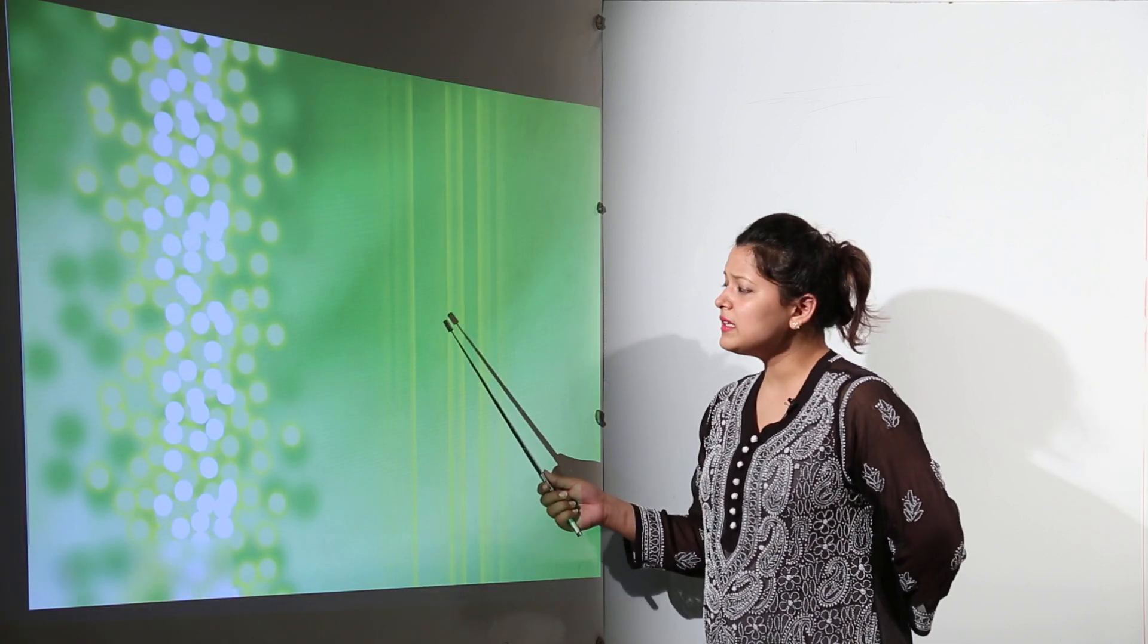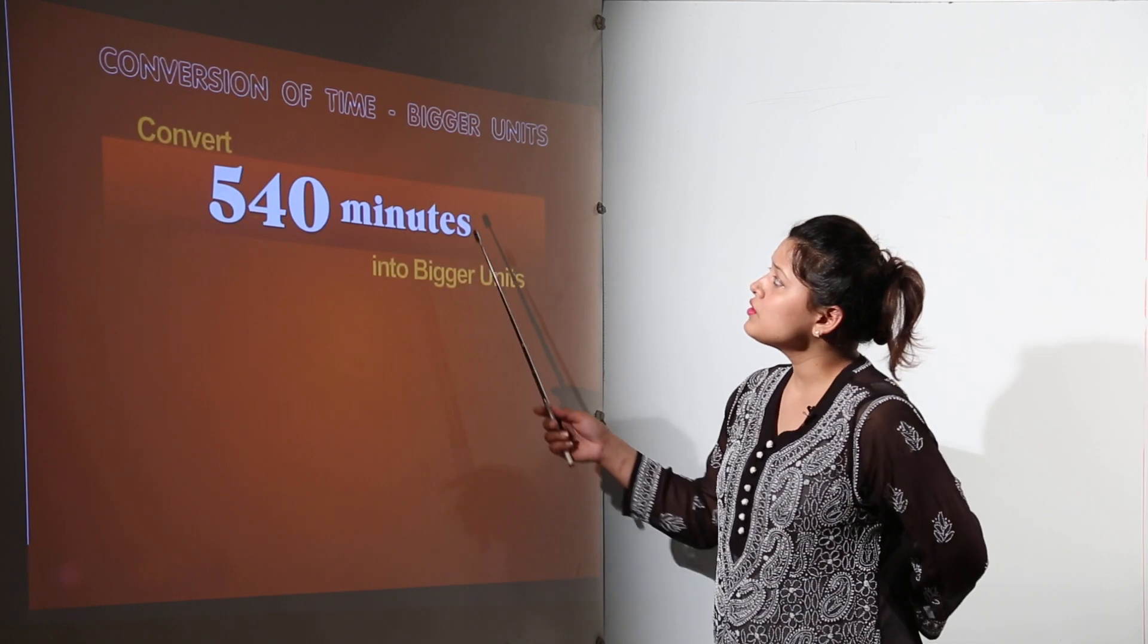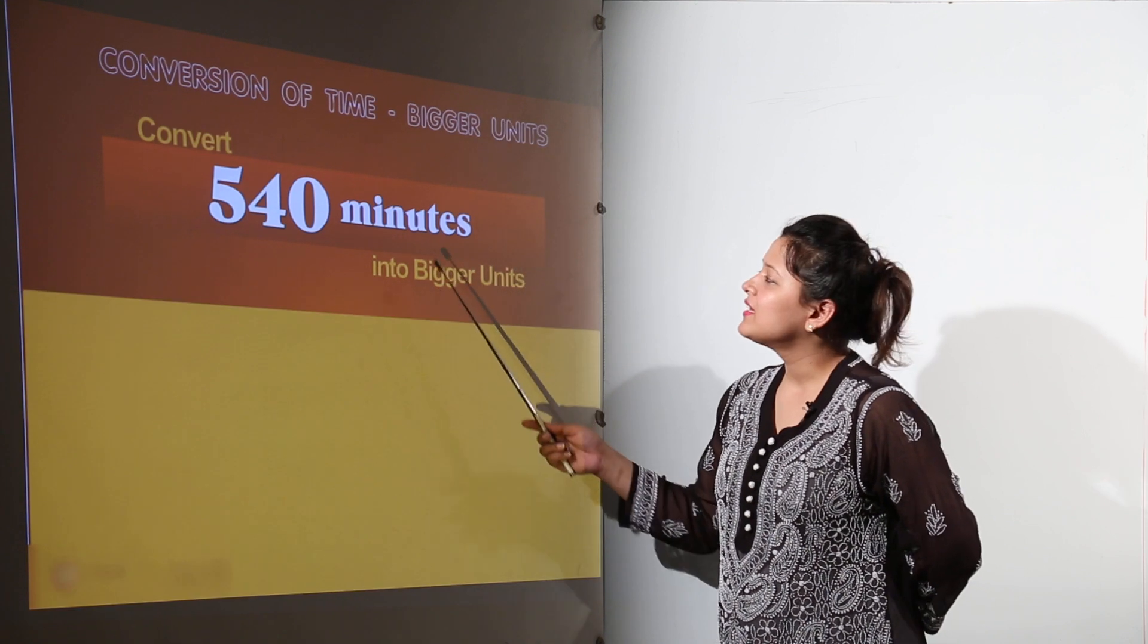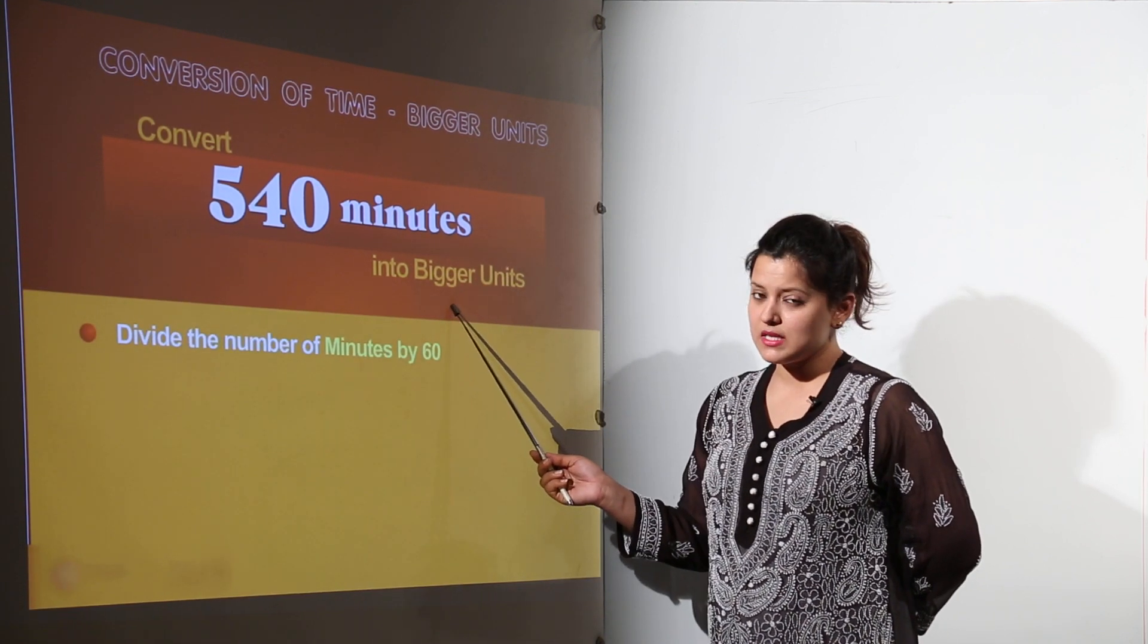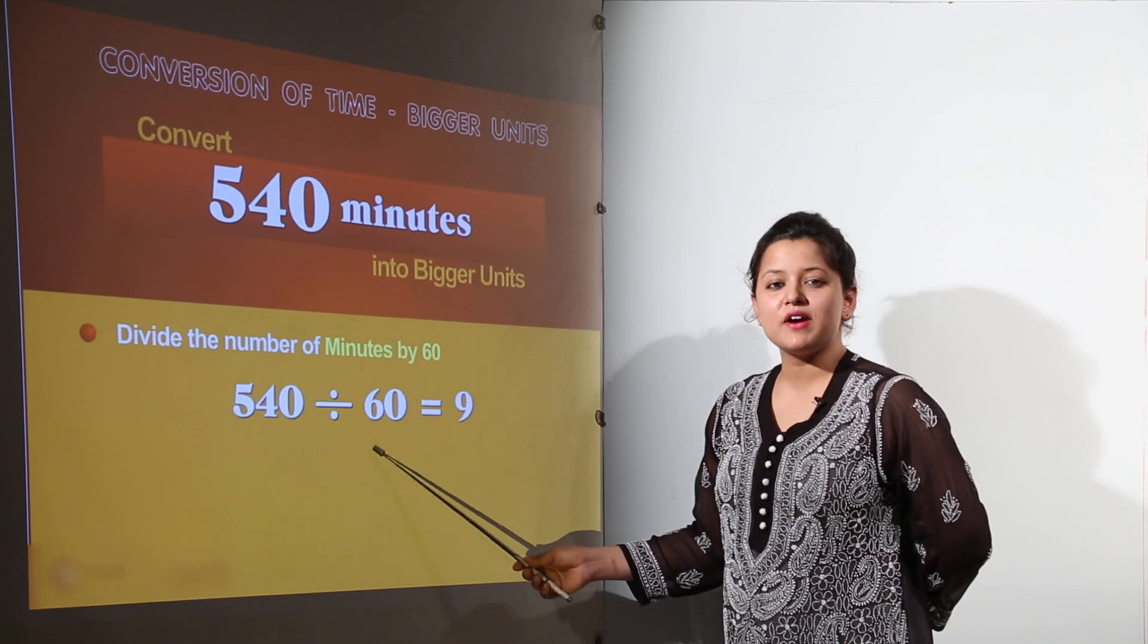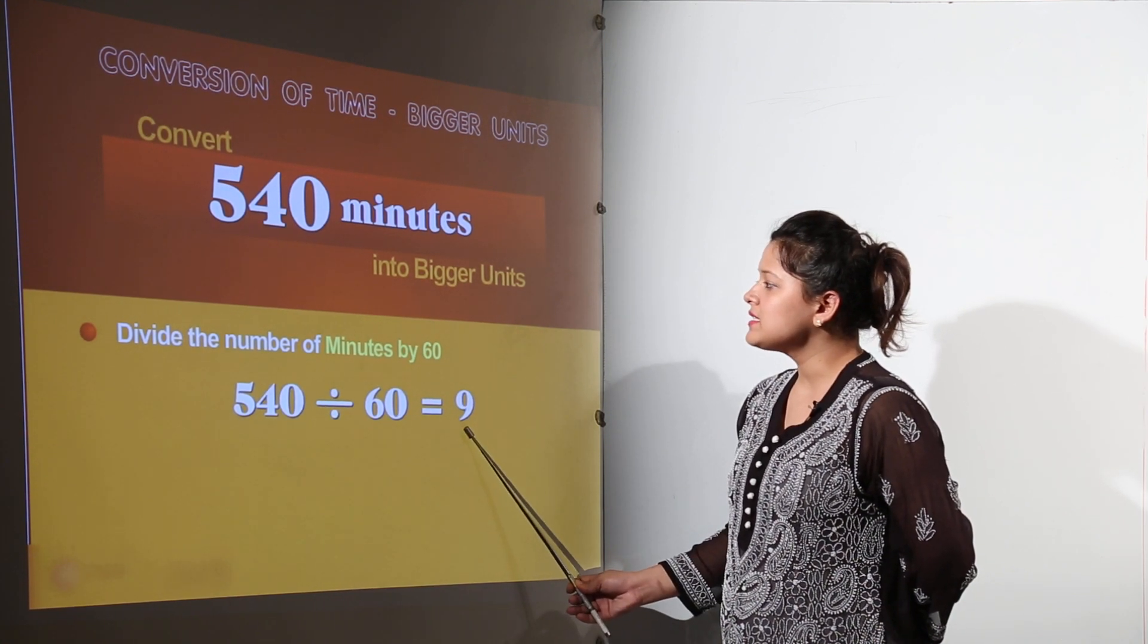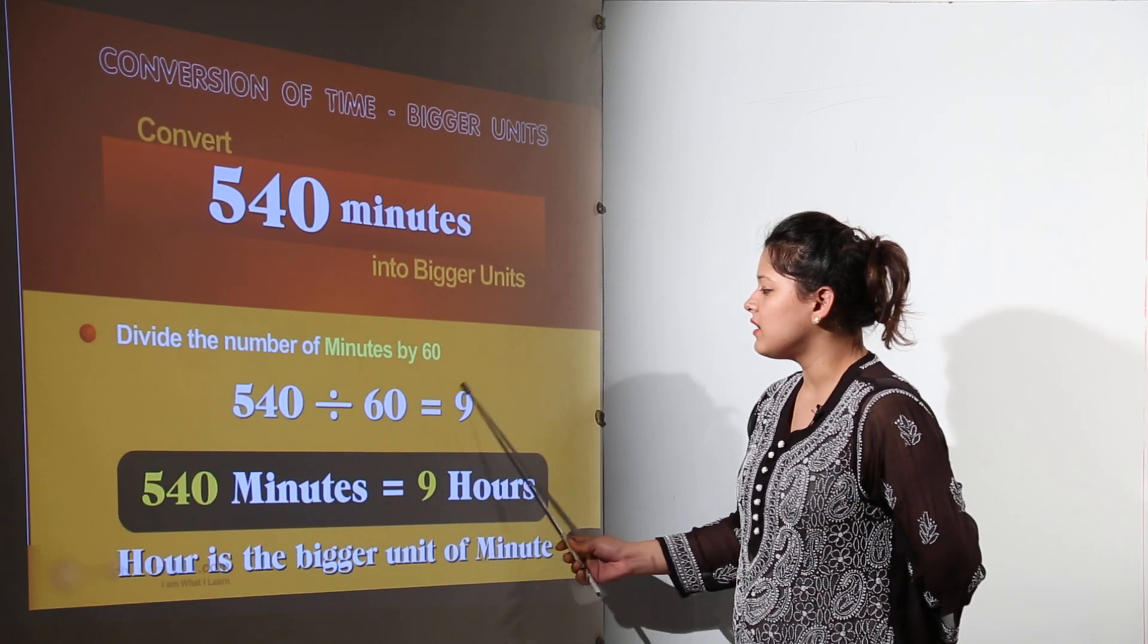These are one of the easiest conversions that you can learn. Now, conversion of time but in bigger units this time. Here we have 540 minutes to be converted into bigger units. The bigger unit would be definitely hours. So for conversion we have 540 divided by 60. That gives us 9.